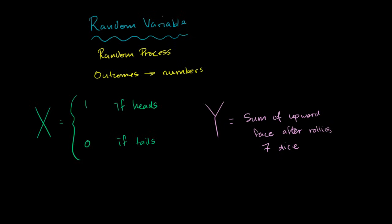So for example, if you cared about the probability that the sum of the upward faces after rolling 7 dice is less than or equal to 30, the old way that you would have to have written it is the probability that the sum of - and you would have to write all of what I just wrote here - is less than or equal to 30. But now we can just write the probability that capital Y is less than or equal to 30. It's a little bit cleaner notation.